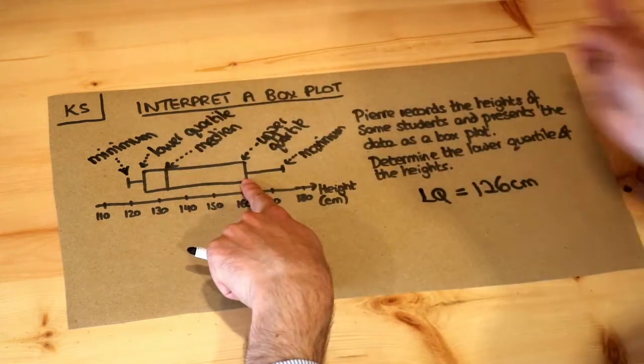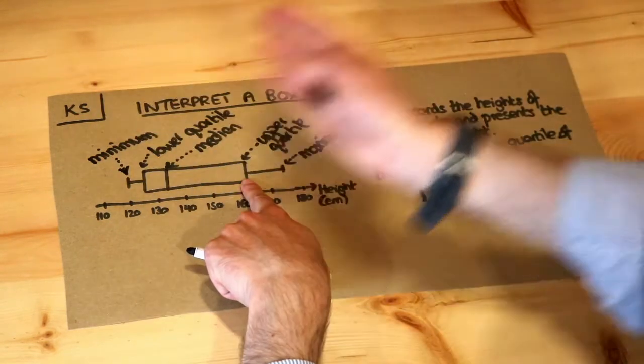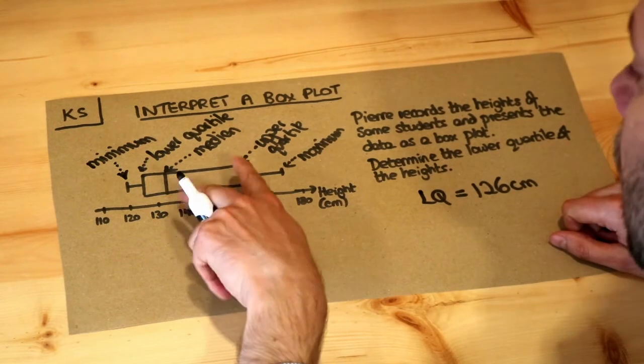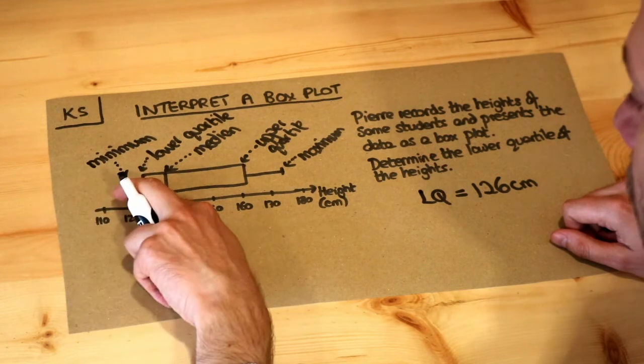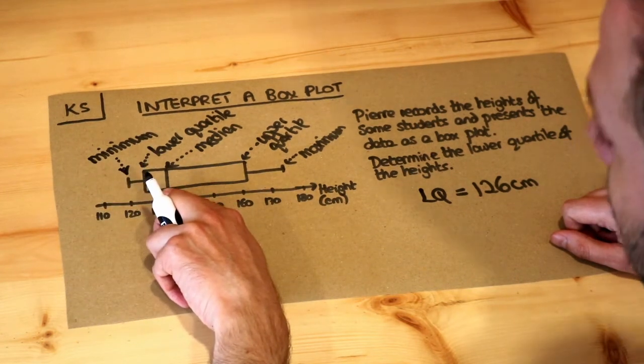so like three quarters of the way along your students if you were to order them in ascending order of height, that spread is more than the difference between a quarter of the way along your students and halfway across your students.